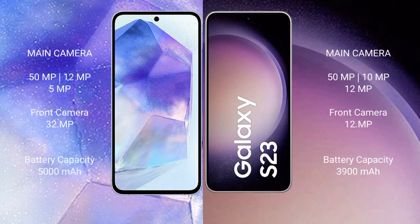Samsung Galaxy A55 features a rear triple camera setup with 50MP, 12MP, and 5MP lenses, and a 32MP front camera. Samsung Galaxy S23 also features a rear triple camera setup.